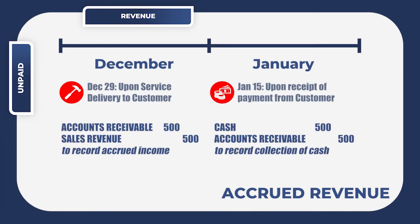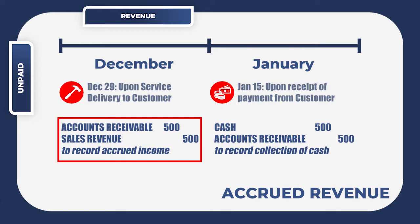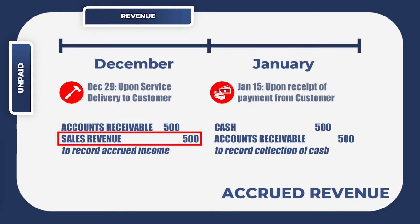The journal entry to record an accrued revenue is a debit to accounts receivable and a credit to sales revenue. Under accrued revenue we are recording an income because it is rightfully earned during the period even though cash has not yet been collected, which is why we have accounts receivable — which goes to the balance sheet.